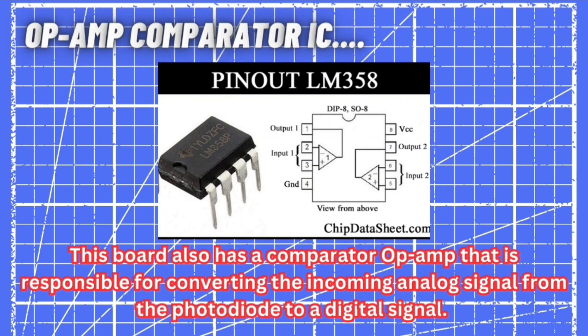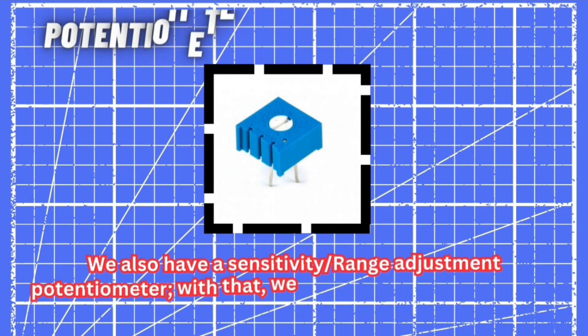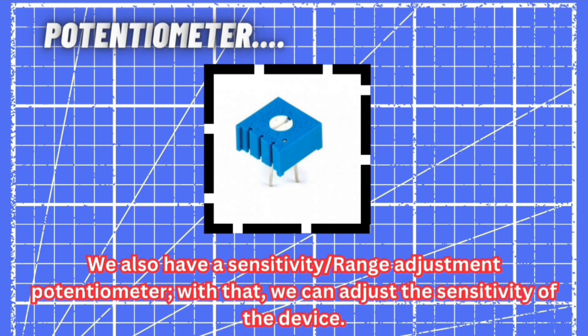Now let's come to our third component: the op-amp comparator IC. Here you can see its pinout diagram — the LM358. This board has a comparator op-amp that is responsible for converting the incoming analog signal from the photodiodes to a digital signal. When the IR sensor senses something, its feedback comes as an analog signal, which is then converted into a digital signal with the help of this op-amp comparator IC.